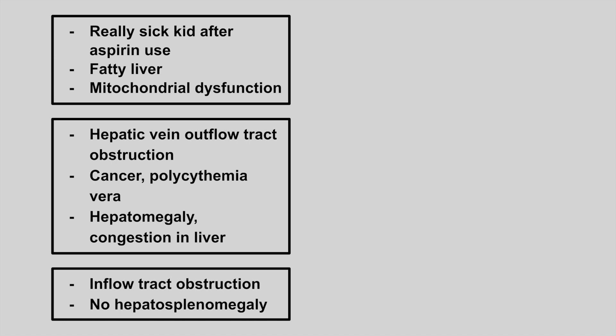The next patient is a really sick kid after aspirin use who develops fatty liver and mitochondrial dysfunction. This is Reye syndrome. They usually mention a child who gets a viral infection and then a parent gives them over-the-counter aspirin, leading to sudden liver failure. Remember, the only time you should give a child aspirin is in Kawasaki disease.